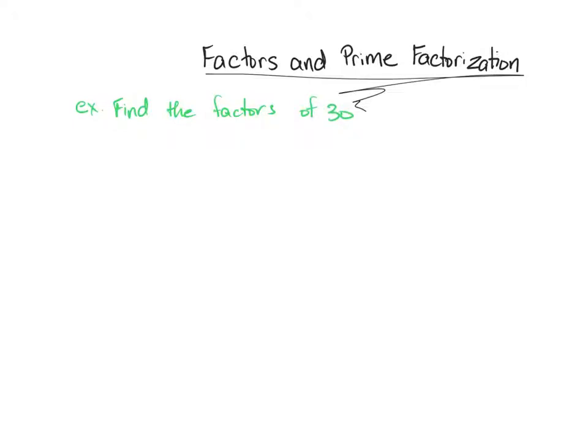So the factors of 30 are numbers that when you multiply it by another number, you'll get 30. And we're interested in whole numbers. So whole numbers when multiplied by another whole number gives you 30.